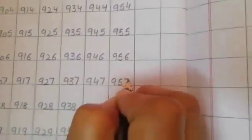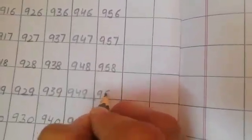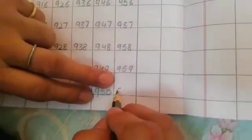956, 957, 958, 959. Then what comes after 959? 960.